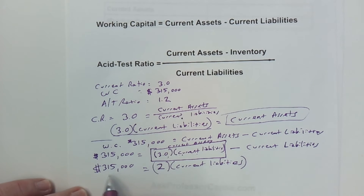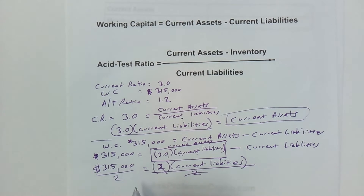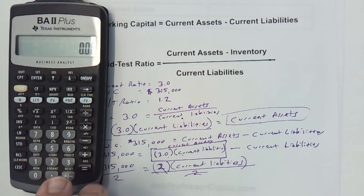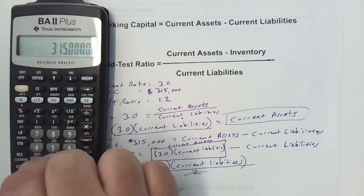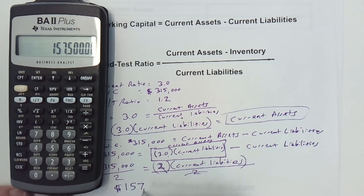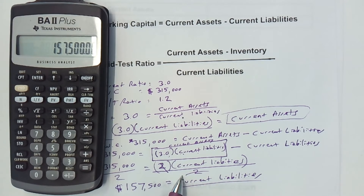So, 2 times current liabilities equals $315,000. If I want to find current liabilities, let's divide both sides by 2. I have 315,000 divided by 2, and I'm going to pull out my BA2 Plus calculator. 315,000 divided by 2 gives me $157,500. That is my current liabilities. So, now I have found one piece of the puzzle: current liabilities equals $157,500.